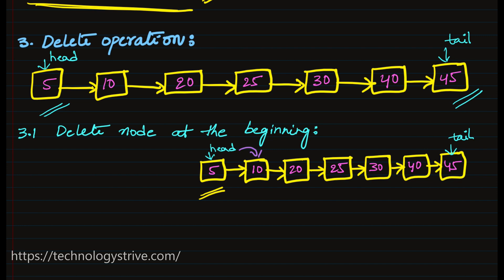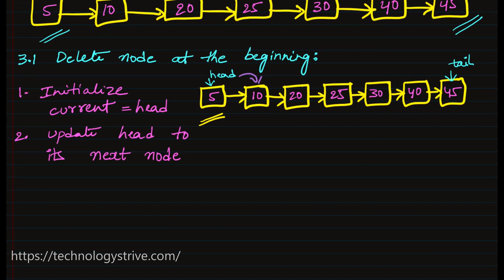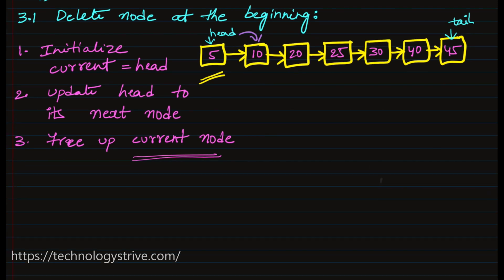Initialize current equal to head, then update head to the next node. Once that is done, free up the current node. In languages like Java, freeing up is automatically handled by the garbage collector. In some languages we have to specifically mention how to free up the current node's space. This is how we delete a node at the beginning.